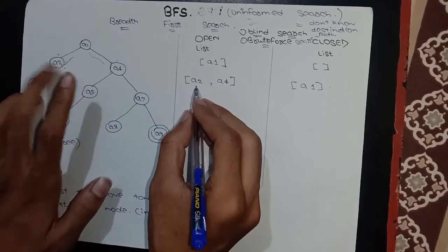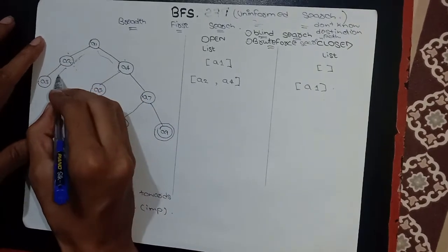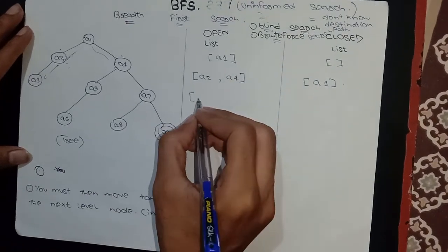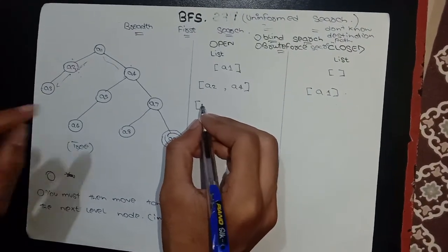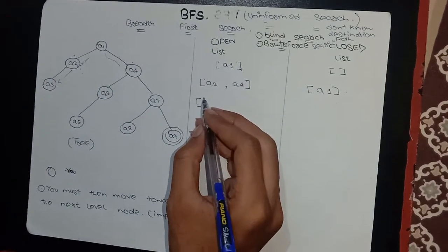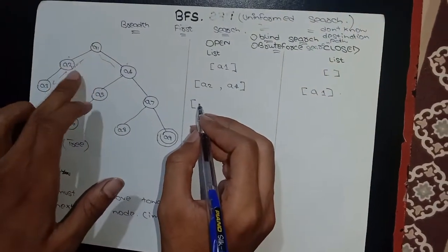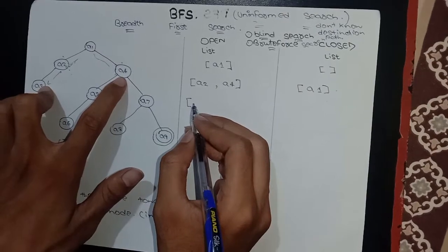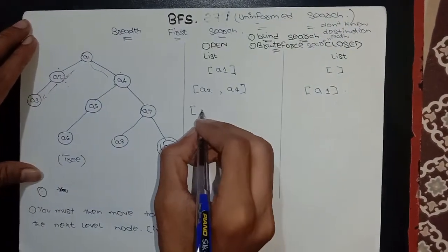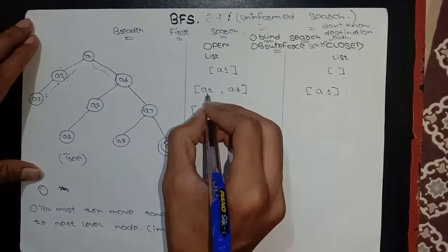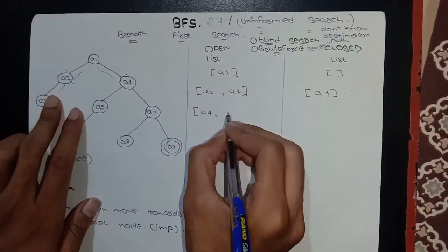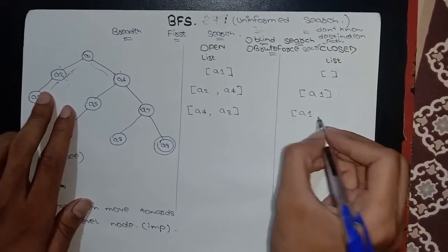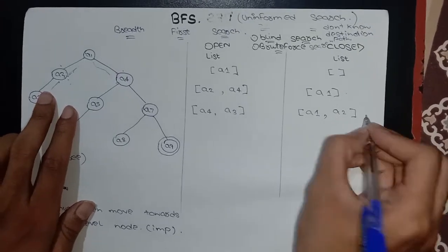In BFS, we explore all the neighbor nodes. According to this formula, I have to write A4 first, because BFS explores all neighbor nodes which are connected to its source node. So I write A4, then further explore A2. A2 has A3 as a child node. Then I will put A2 into the close list.